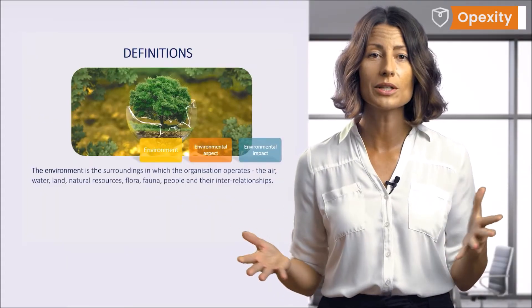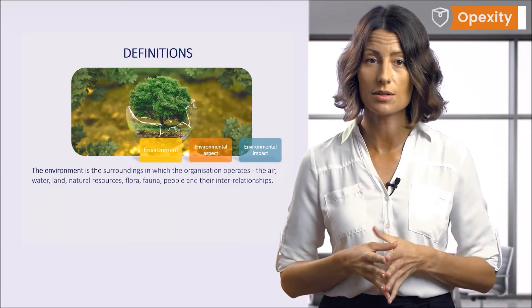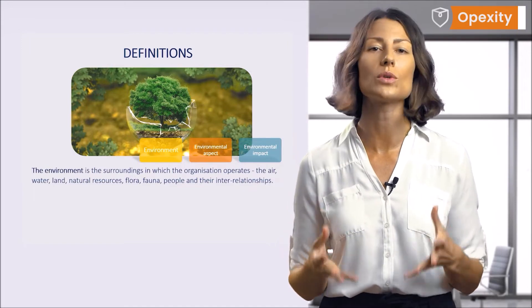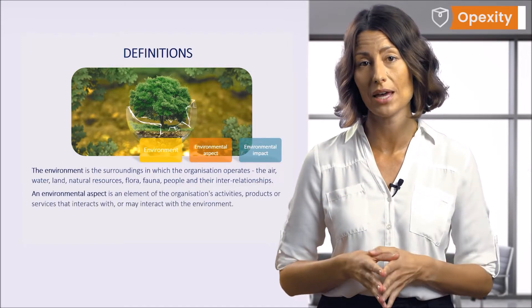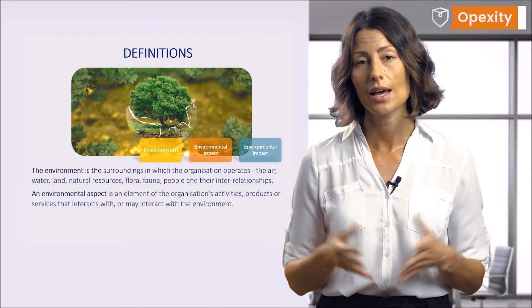The environmental management system is based on the notion of dealing with so-called environmental aspects. An environmental aspect is an element of an organization's activities, products, or services that interacts or may interact with the environment — meaning it may affect the environment.